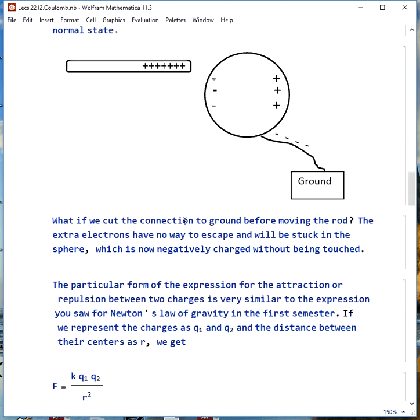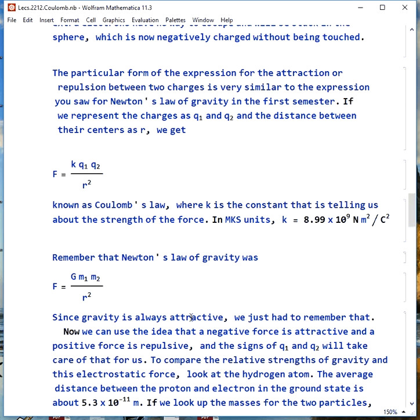The particular form of the force between the charges, whether they're positive or negative, whether they're opposite or similar, looks a lot like Newton's law of gravity from last semester. If we represent the charges as q1 and q2 and the distance between their centers as r, we can write F = k q1 q2 / r^2. This is Coulomb's law, where k is the constant that's telling us about the strength of the force.